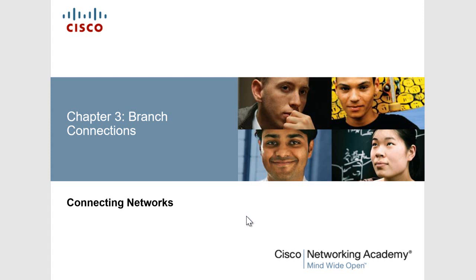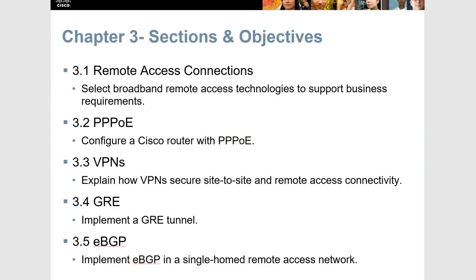This is the video for CCNA 4 Chapter 3, Branch Connections. In this video, we're going to discuss remote access connections, point-to-point over Ethernet, VPNs, GRE tunneling, and external BGP. That's what we've got coming up.